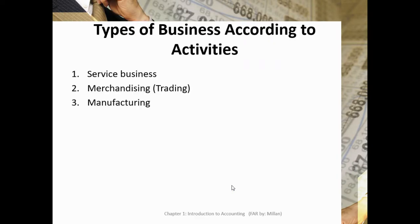What are the different types of business according to activities? There are three types: service business, merchandising or trading, and manufacturing.